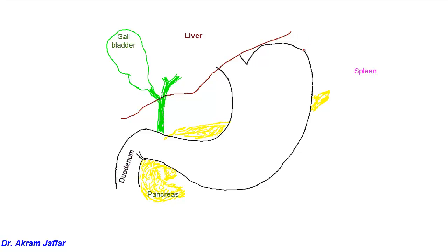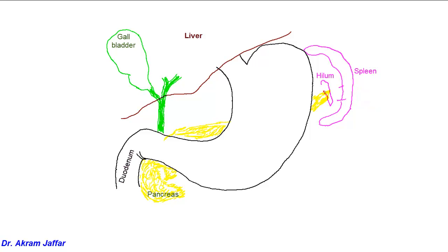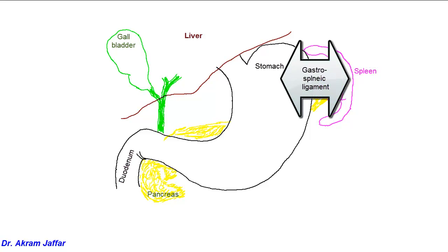This is the position of the spleen here. That's the diaphragmatic surface of the spleen, and here the visceral surface. The anterior border is characterized by the notch. The spleen has a hilum — this is the region of the hilum of the spleen, where structures pass in and out, mainly the splenic artery and splenic vein, some nerves, and also the tail of the pancreas. This part of the visceral surface of the spleen is related to the stomach, and the spleen communicates with the stomach by the gastrosplenic ligament.